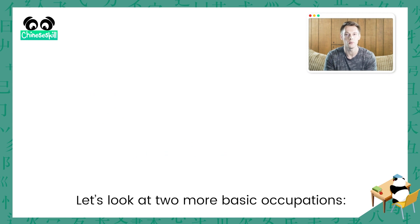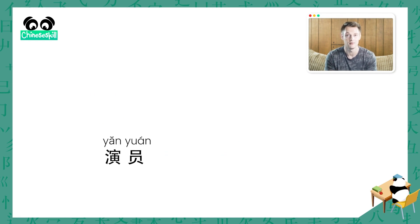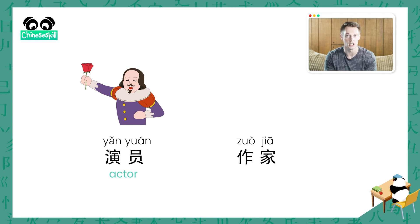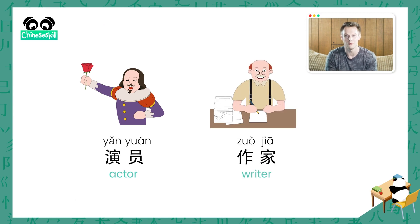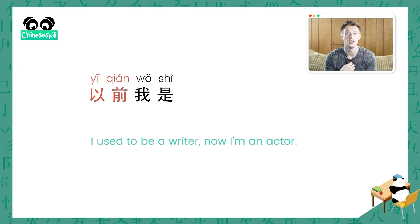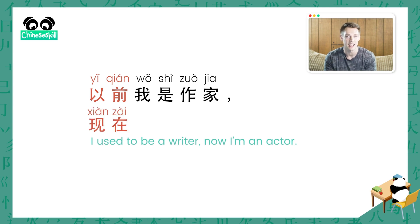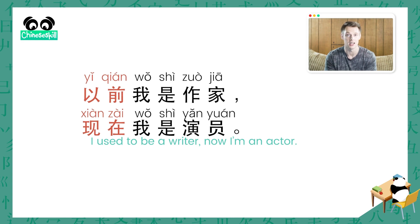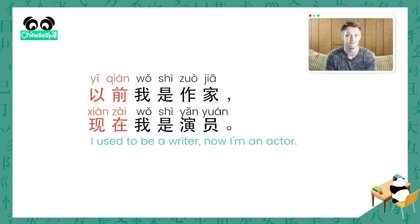Let's look at two more basic occupations. 演员 means actor, and 作家 means writer. So how would you say: I used to be a writer, now I am an actor? 以前我是作家。现在我是演员。 I used to be a writer, now I am an actor.